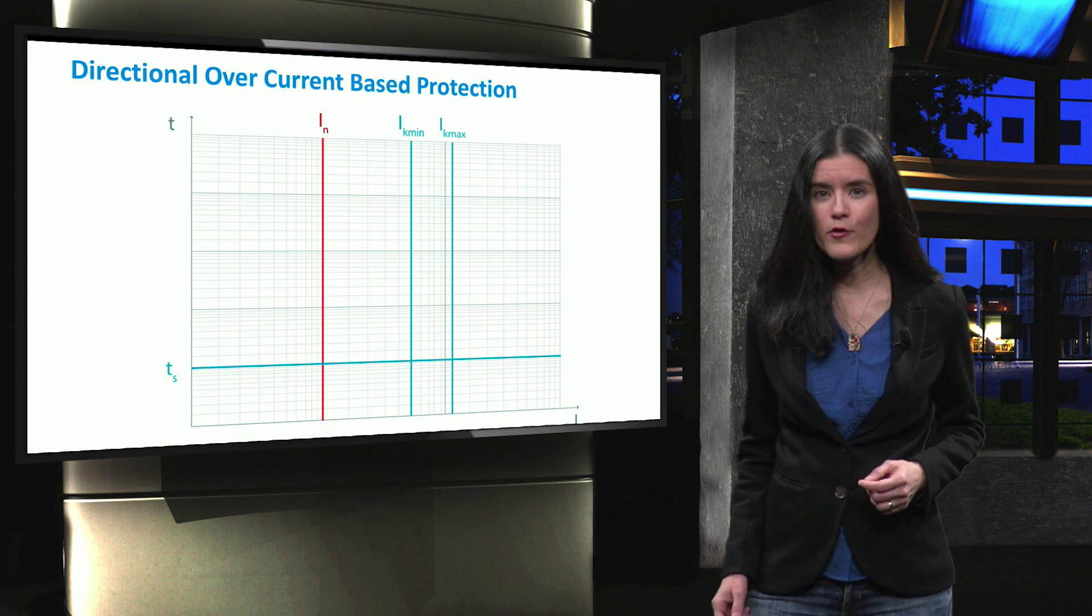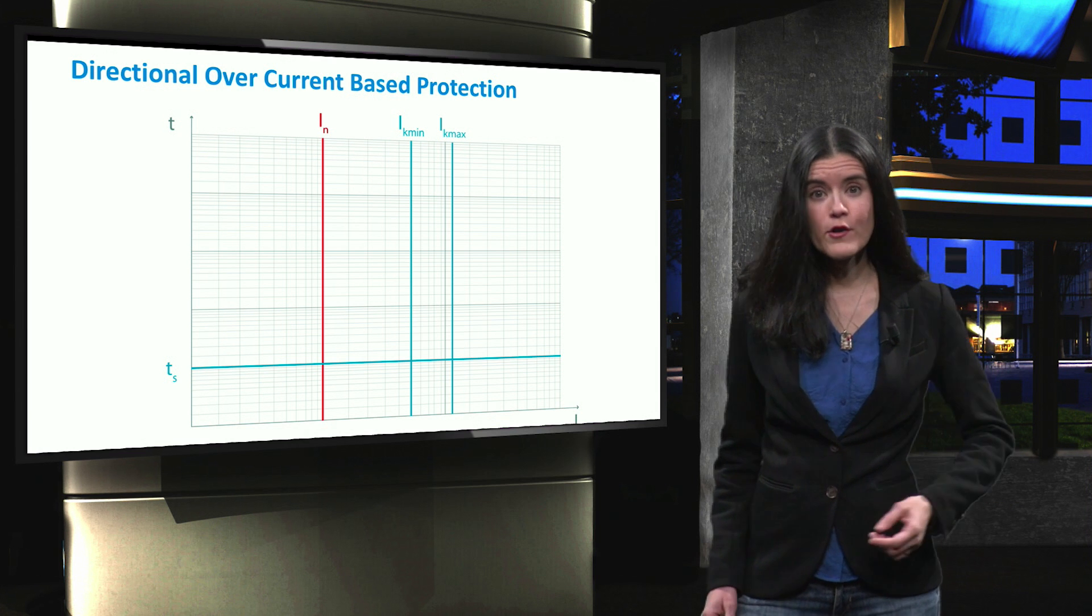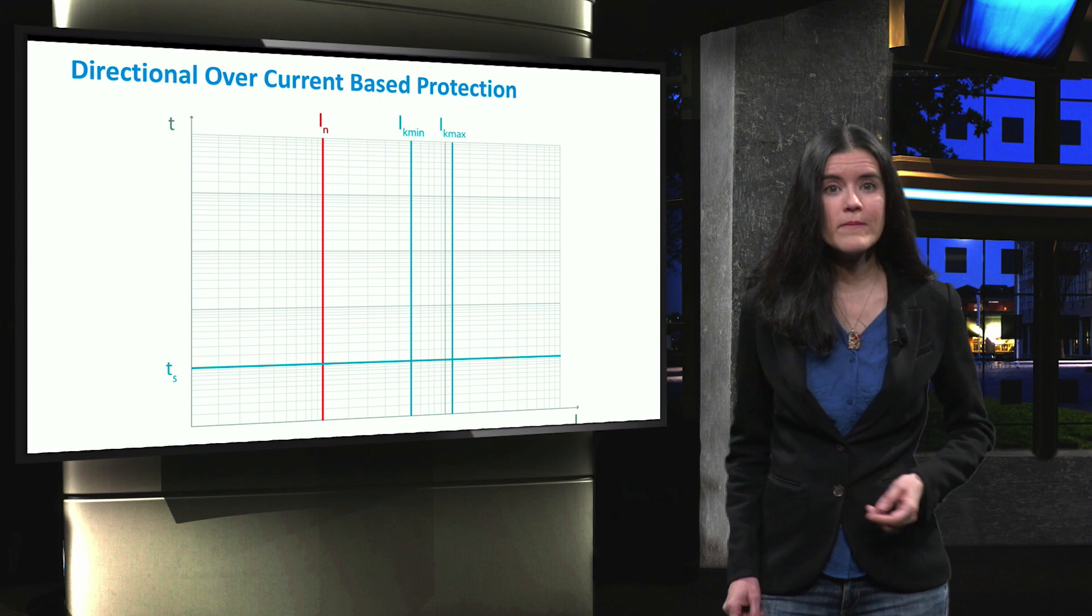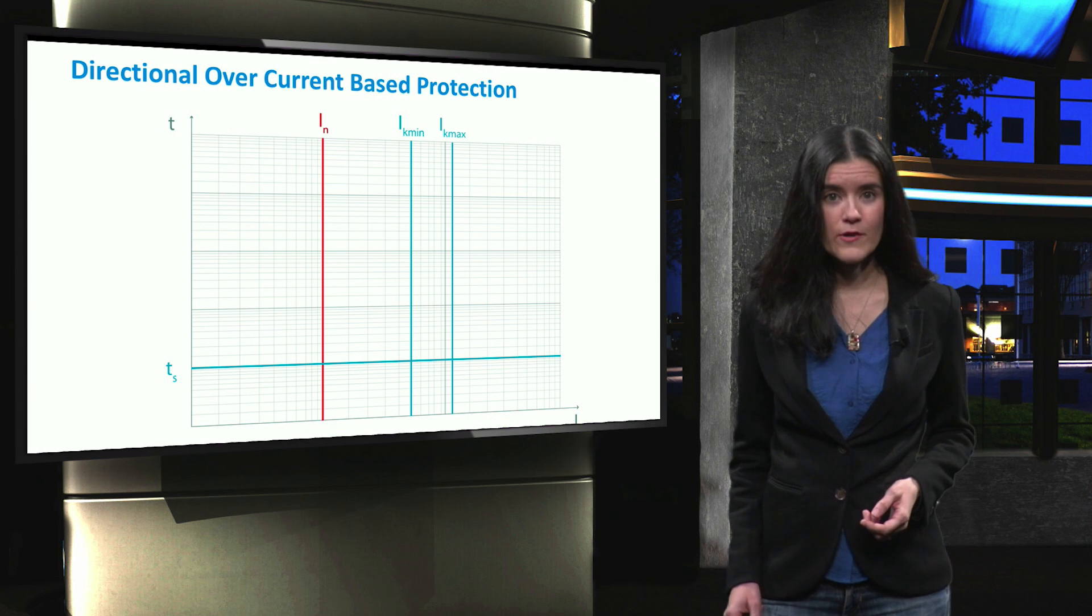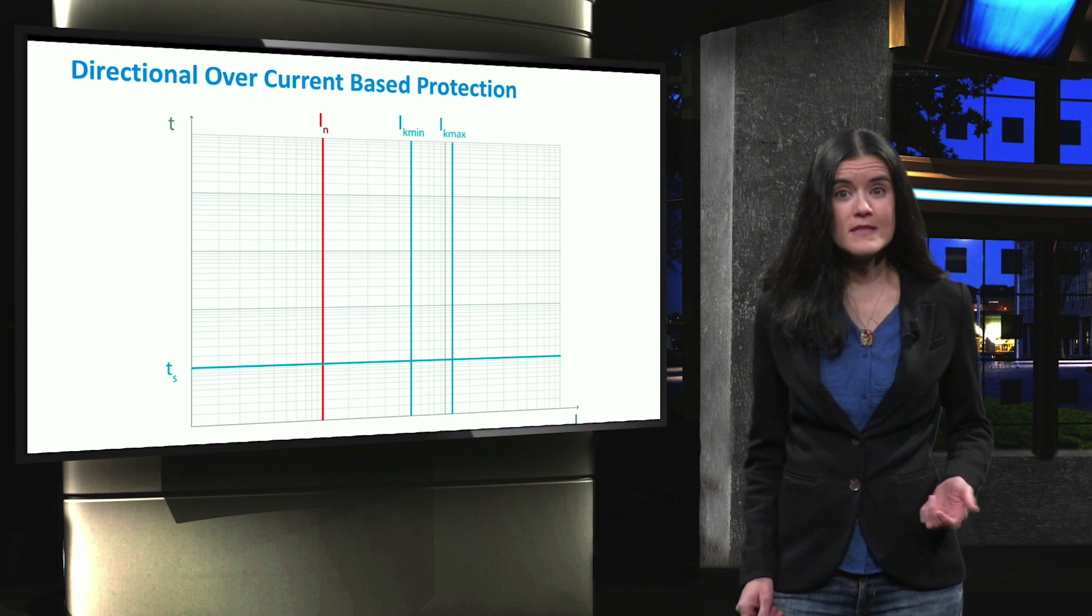Let's review again the time-current tripping curve of an overcurrent relay that we have already seen when talking about the speed protection criteria. That characteristic consists of three parts.